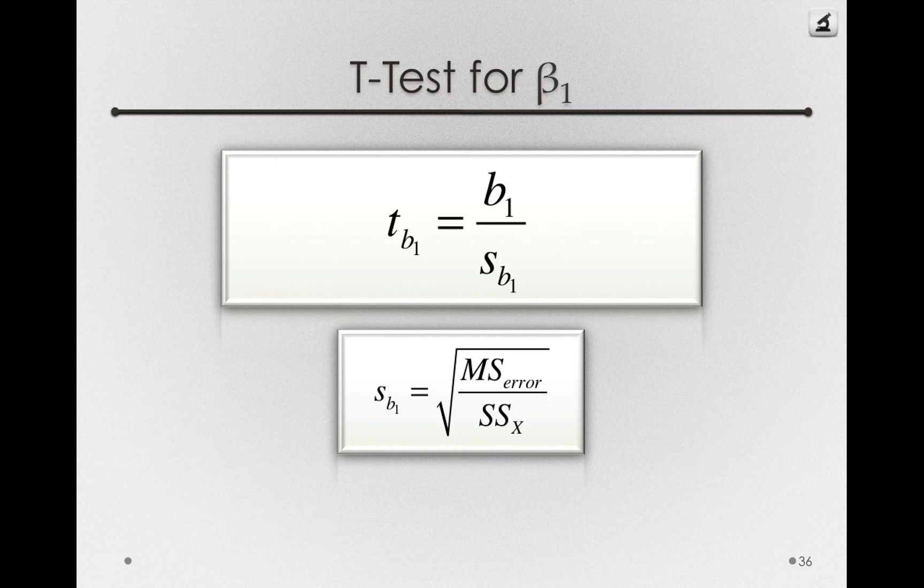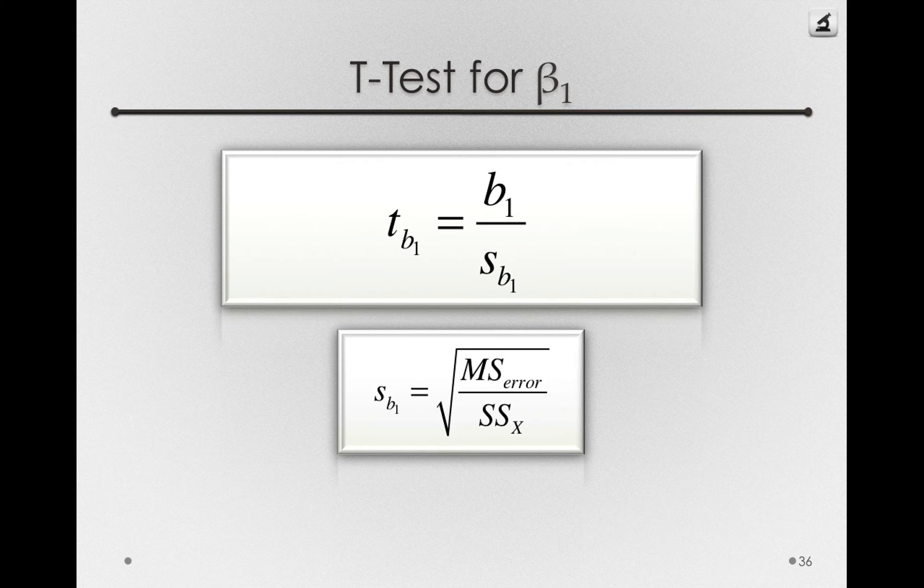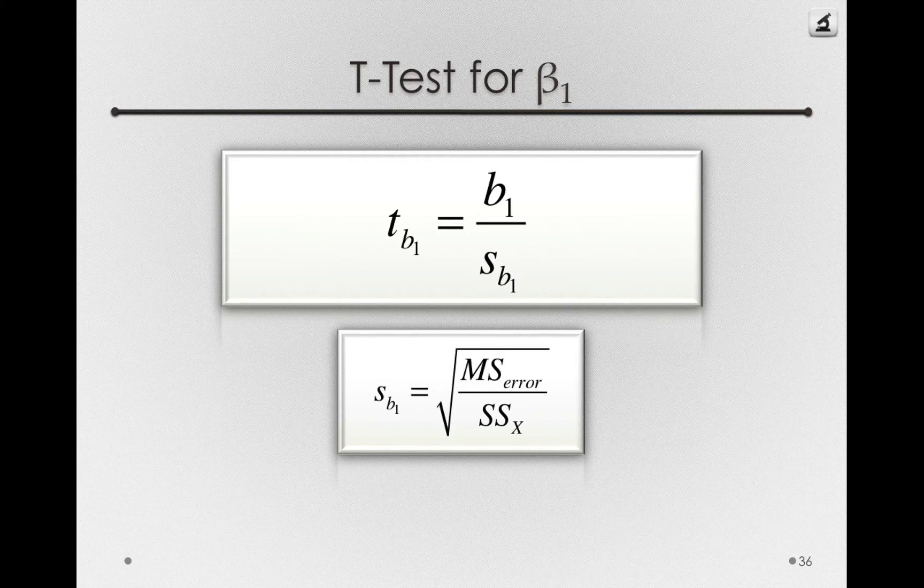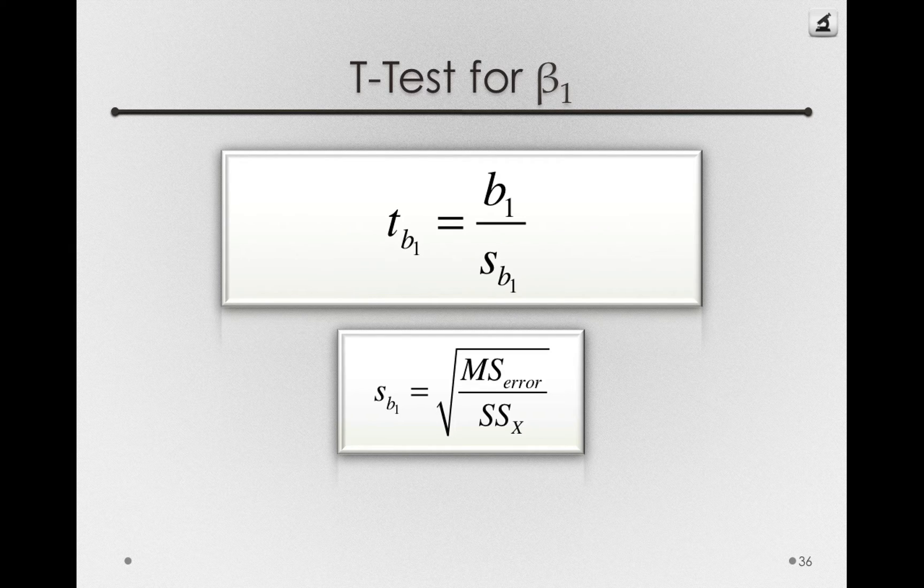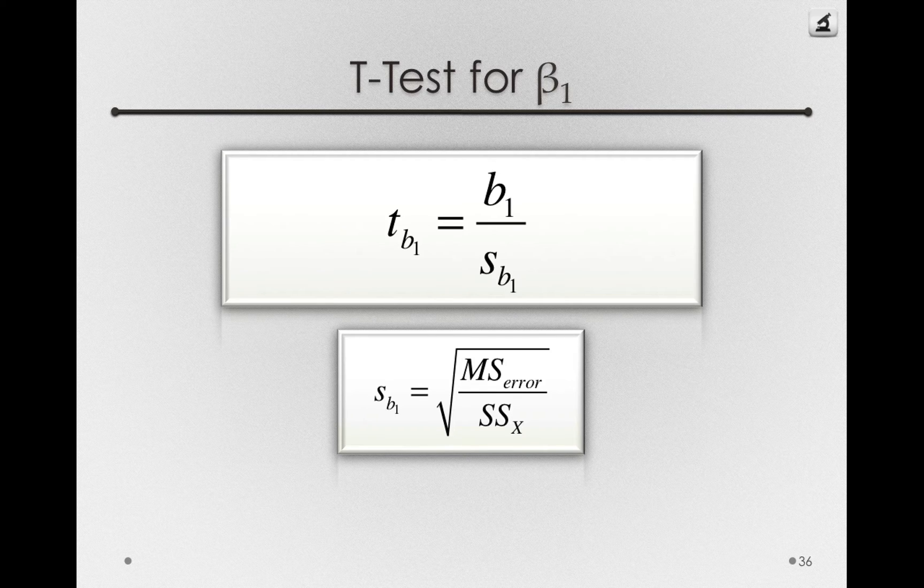Typically, our standard error formulas have n in the denominator. In fact, the sums of squares are sensitive to how many people we have in our sample. If we add more people to our sample, we're adding more squares that we're summing up. So the sums of squares for x will get larger when you add more people to it.